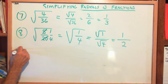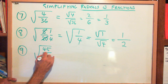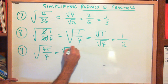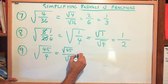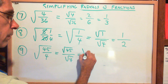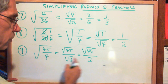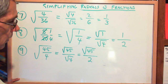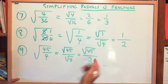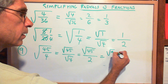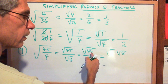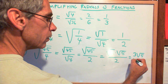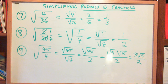Example 9: the square root of 45 over 4. Is 45 a perfect square? No. Is 4 a perfect square? Yes. So I separate: square root of 45 over the square root of 4. Square root of 4 is 2. Now, is there a perfect square that goes into 45? 9 does — 9 times 5 is 45. So: square root of 9 times square root of 5, all over 2. Square root of 9 is 3. Final answer: 3 square root of 5 over 2. Done.